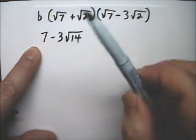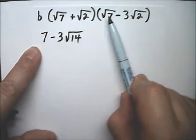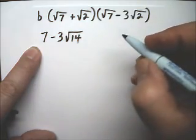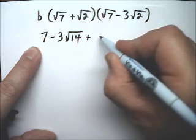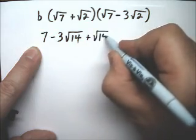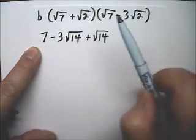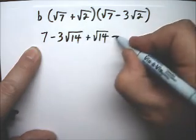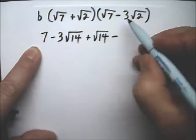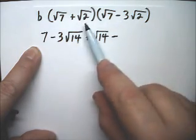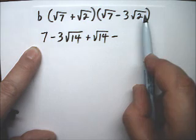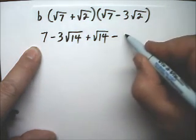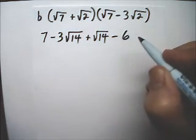That's 2 of them. Now, the square root of 2 times the square root of 7, that's positive square root of 14. And now, the square root of 2 times negative 3 radical 2, that's negative. And it ends up to be 3 times 2, which is 6.